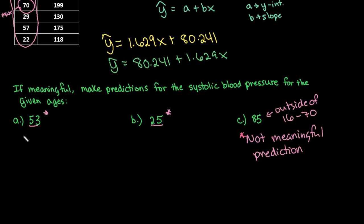Basically, what we're going to do is use either equation to find these. I'm just going to use the first one. I'm going to make a prediction for 53, so technically what I'm doing is 1.629 times 53 plus 80.241. And for the second one, we would do the same thing, but we would use 25 instead. So I would do 1.629 times 25 plus 80.241.